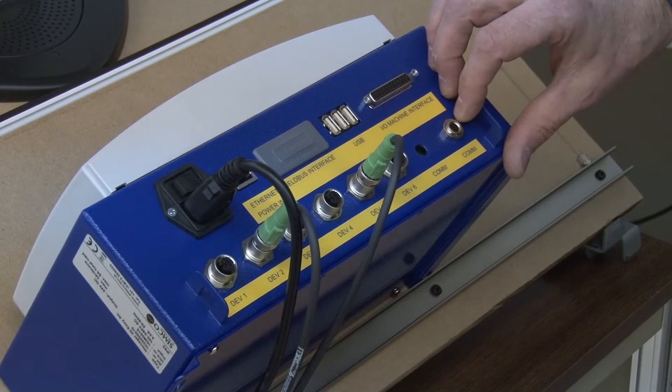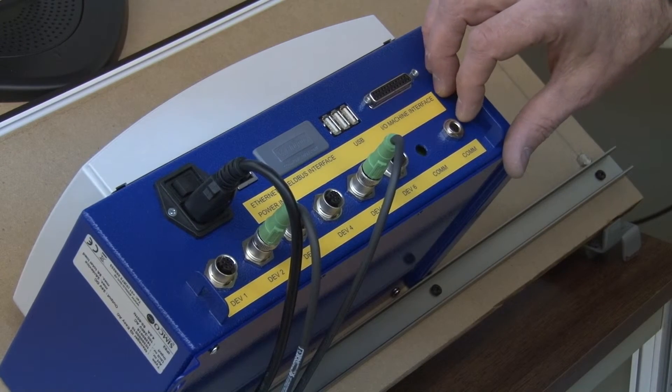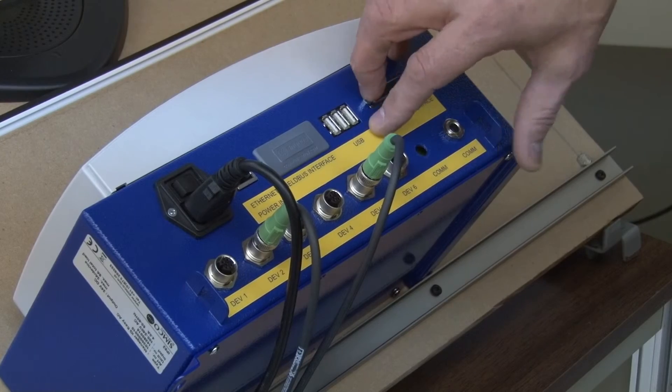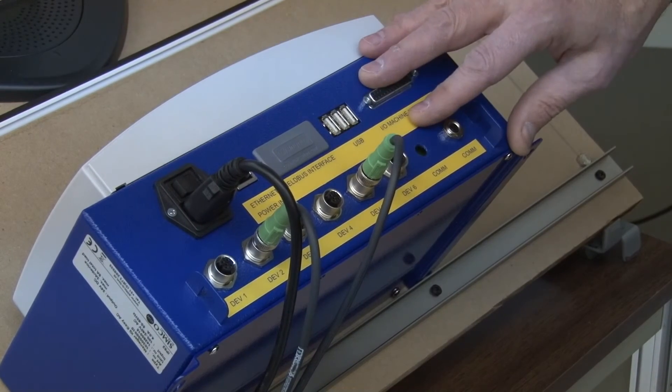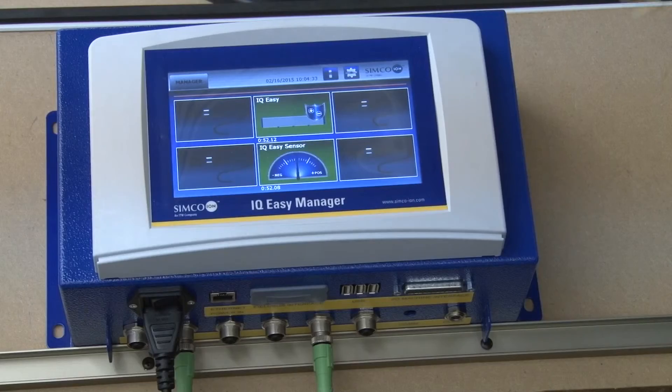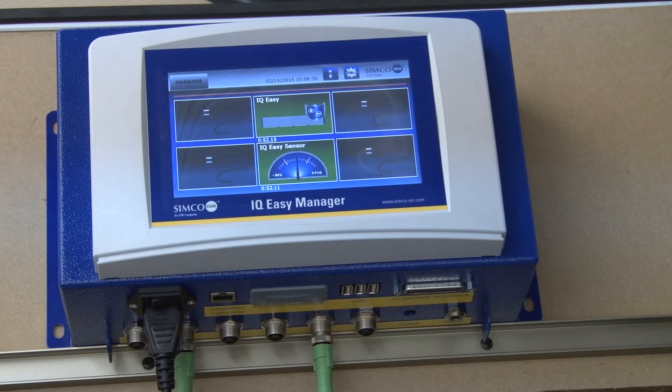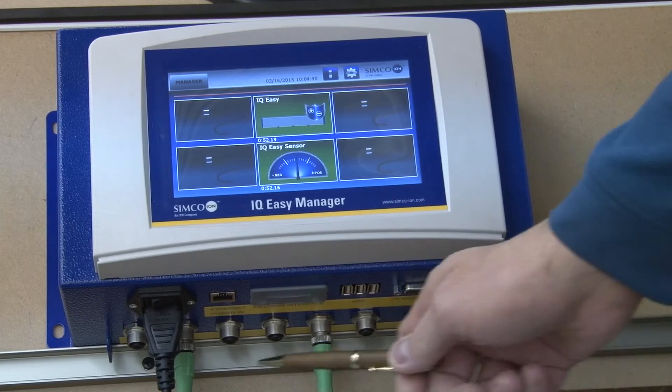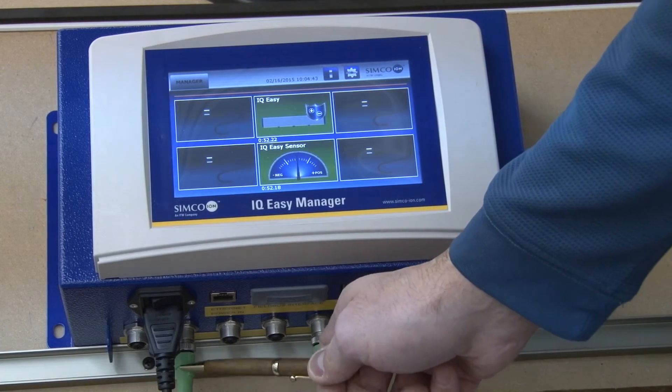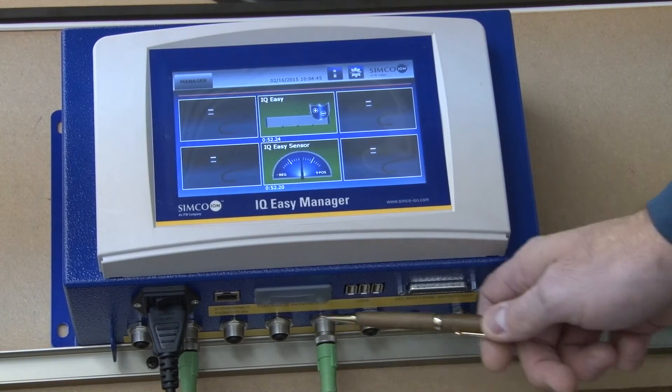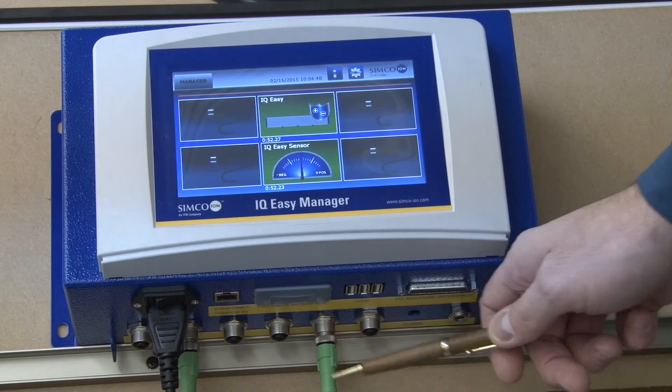This is the connection panel on the IQ Easy manager. You can see that the bar and sensor plug into one of the six available device ports. The IQ Easy manager is not a system that requires addressing of the devices. You can see that we have the static bar installed on port 2 and the neutralizing bar installed on port 5.